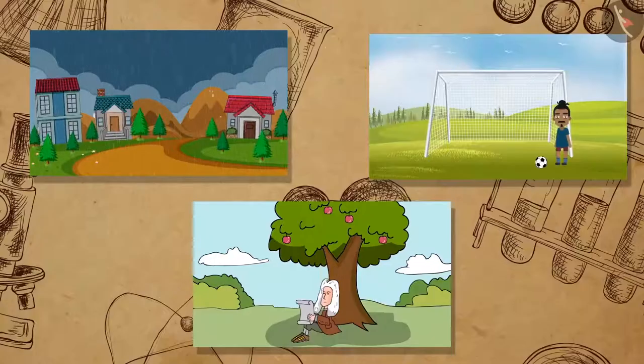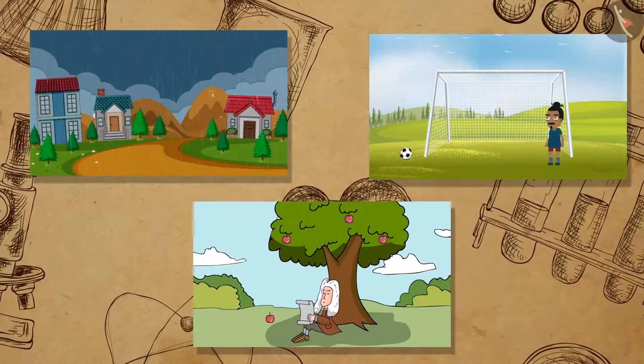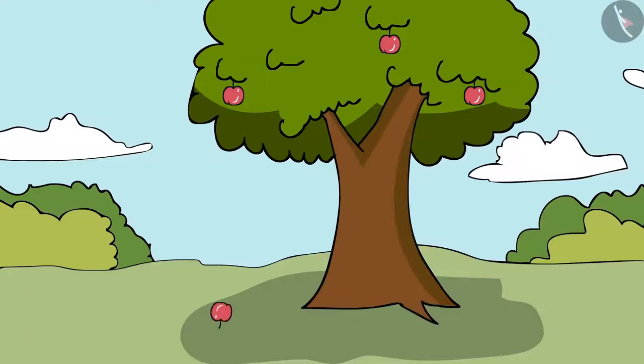Therefore, we can conclude that rain, football and apples are attracted to the earth. But do the objects also attract the earth? If yes, then why don't we see the earth moving towards the apple?